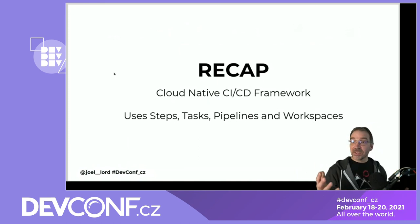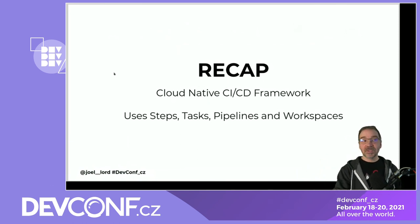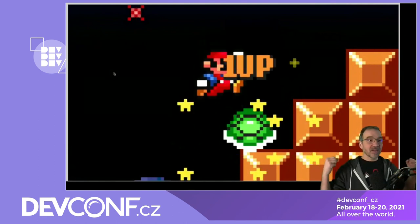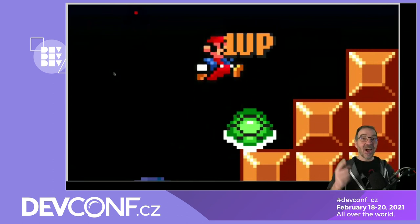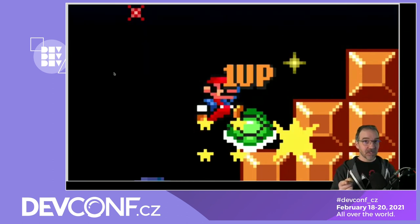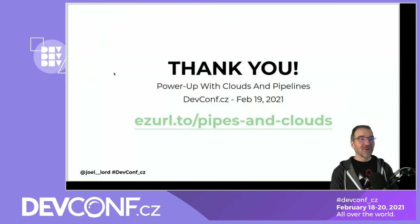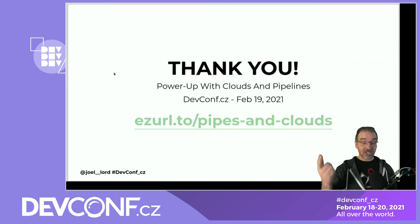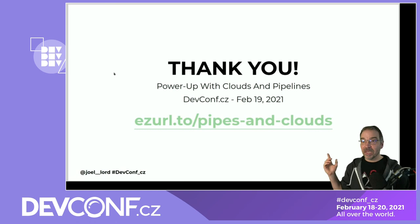Quick recap: Tekton is a cloud-native CI/CD framework that lives entirely inside your Kubernetes cluster. It uses steps, tasks, pipelines, and workspaces. There's also a book coming out soon — check me out on Twitter for more information. Thank you very much for being here, and you'll find all the links at easyurl2/pipesandclouds.